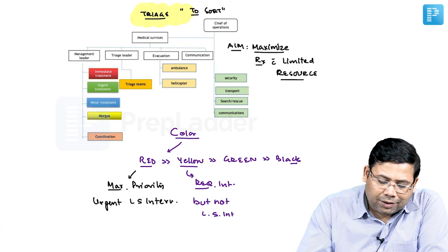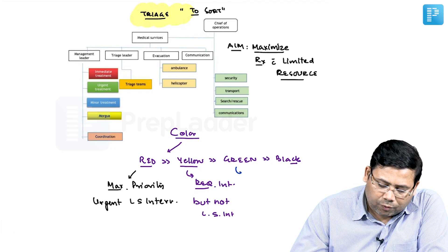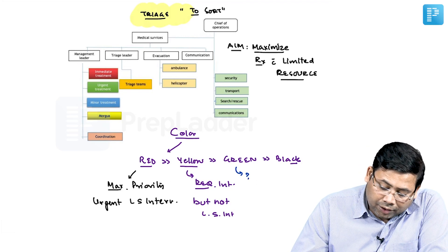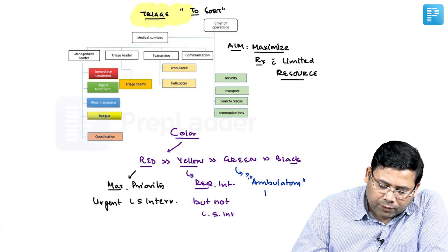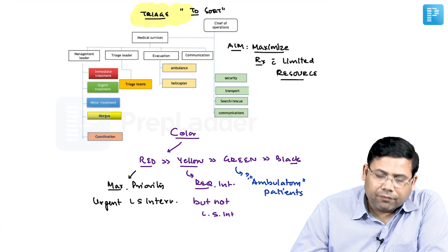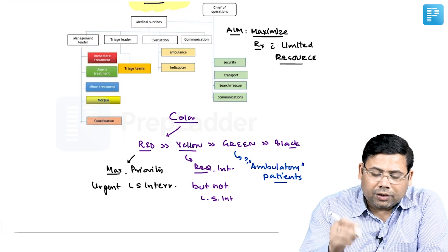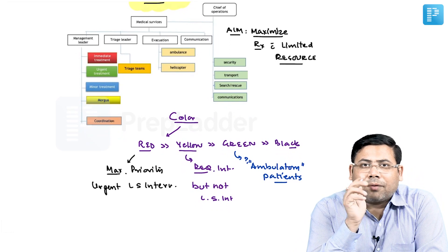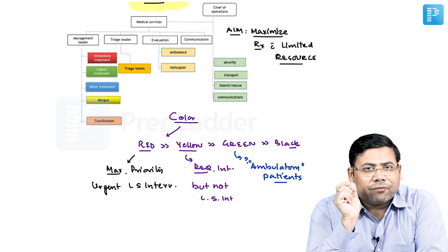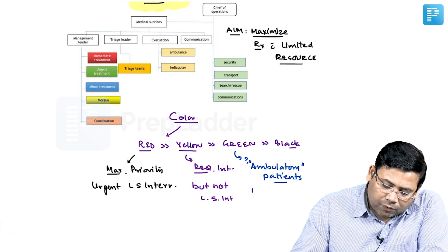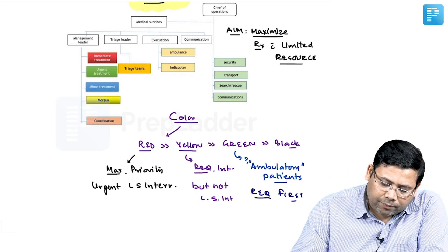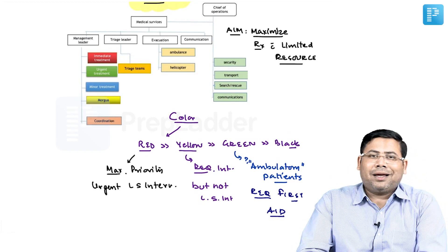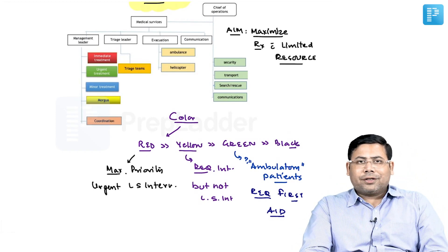When we talk about green, what is important about green? They are ambulatory patients. What do we mean by ambulatory patients? The concept of ambulatory patients means they are not having any significant morbidity. They require first aid, so they are the ones most useful for you because they will recover fast and help in disaster and rescue.